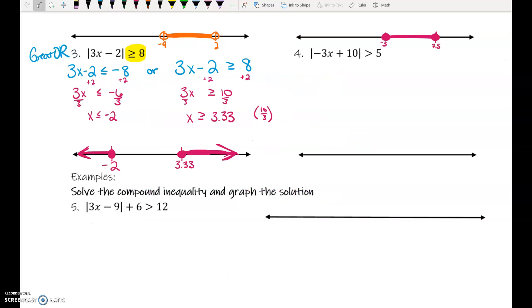To set up number 4, it's another great or. One of our inequalities, we don't change anything. So, over here toward the right, I'm going to write negative 3x plus 10 is greater than 5. Change nothing. The one on the left, I'm going to change the sign, so flip it to less than, and I'm going to take the opposite of the right side, so less than negative 5.